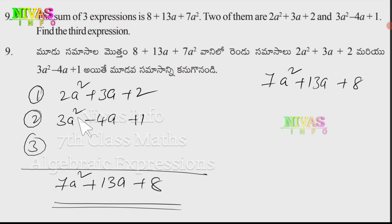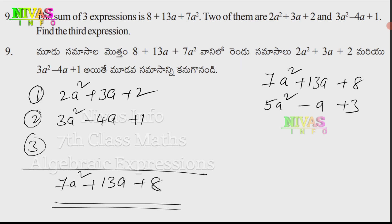Adding the two known expressions: 5a². Next, plus 3a minus 4a — that is only minus a. Next, 2 plus 1 is 3. So now we have to subtract these two from the total result. The result of the two known expressions gives minus a, and we have to change the sign.